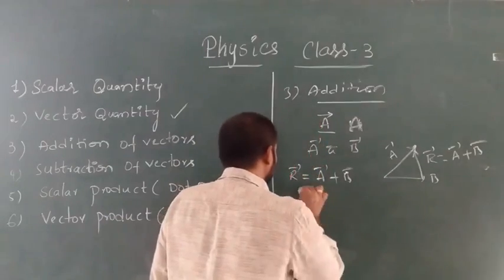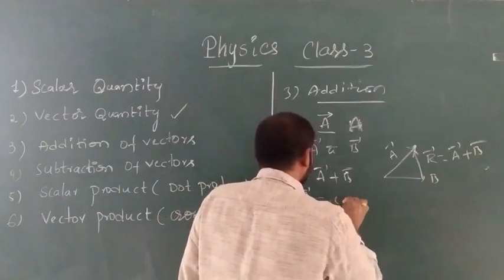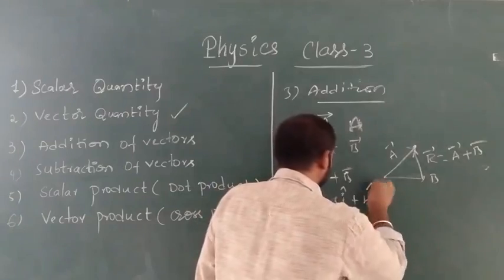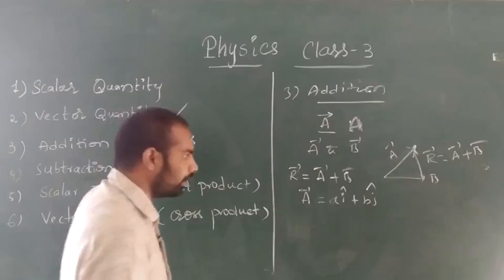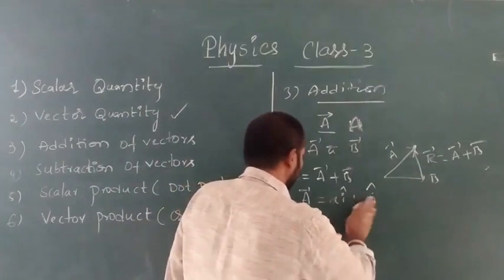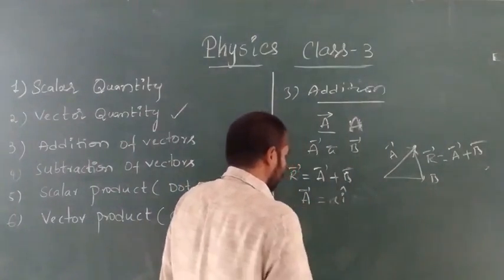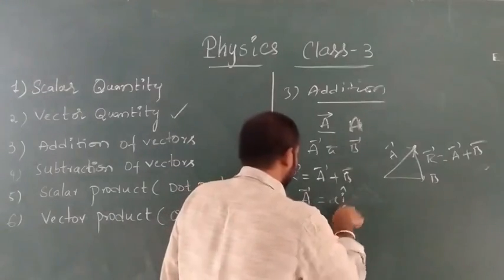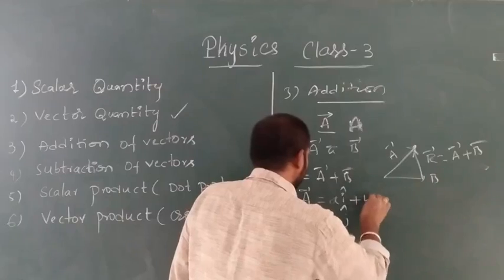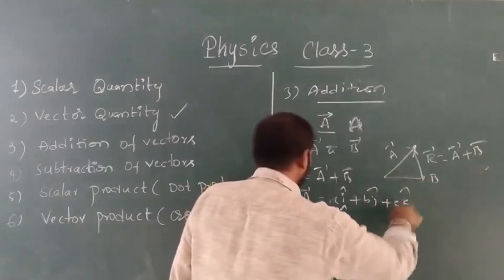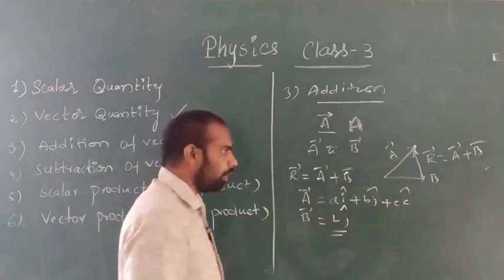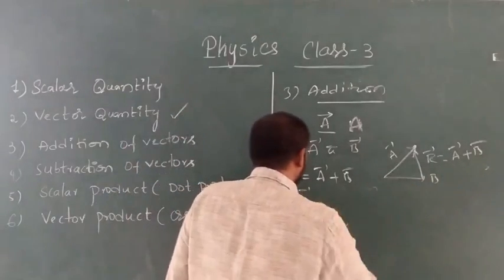For a two-dimensional vector, it can be represented as A-bar equals a₁ i-cap plus a₂ j-cap. For a single-direction vector, A-bar equals a i-cap. For three dimensions, we add a₃ k-cap. We can represent any vector according to its directions. Simply, R-bar equals A-bar plus B-bar — that is how we add two vectors.